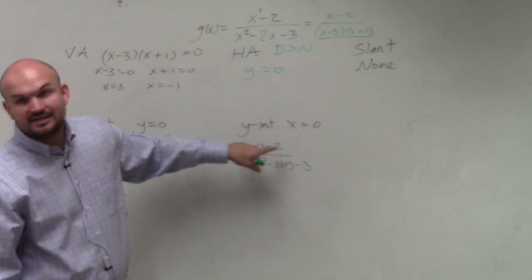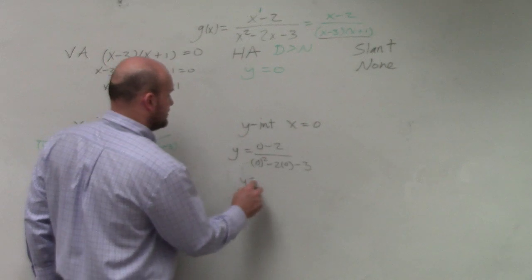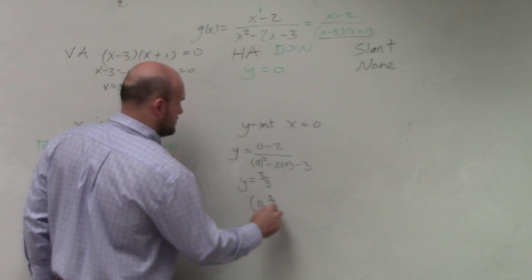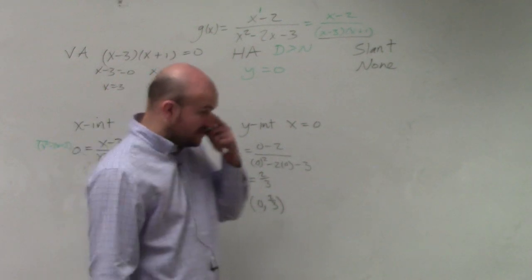0, 0, 0. So I get negative 2 over negative 3, which is a positive 2 thirds. Write that as a coordinate point, 0 comma 2 thirds.